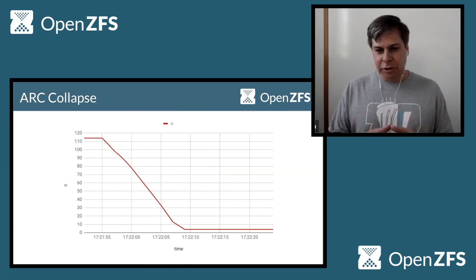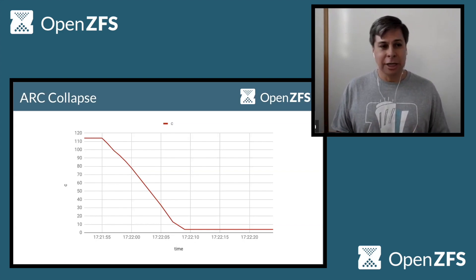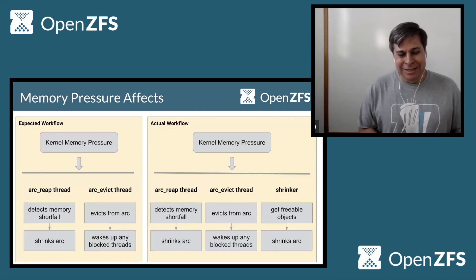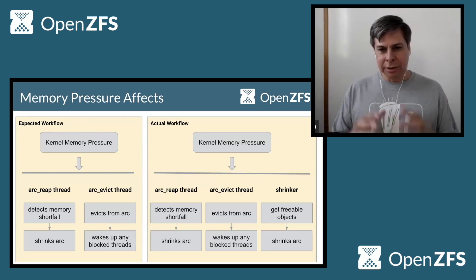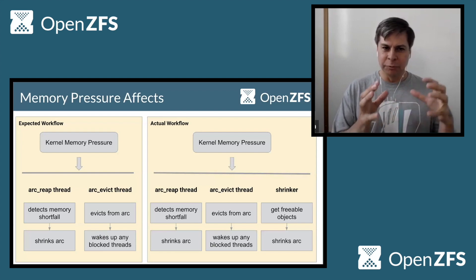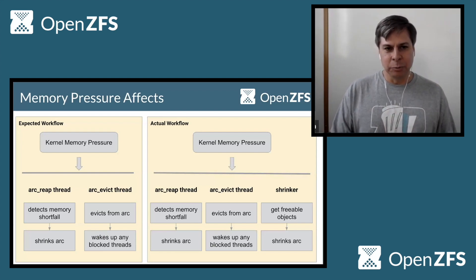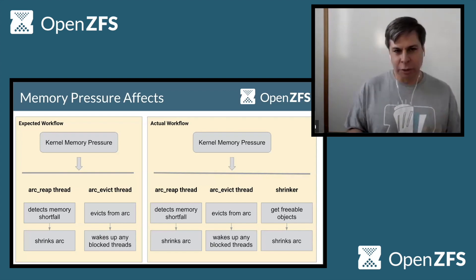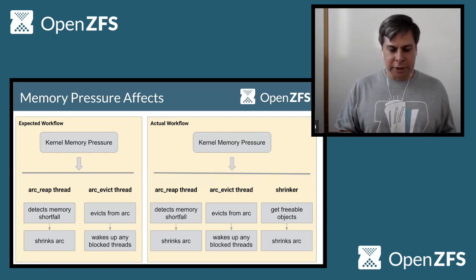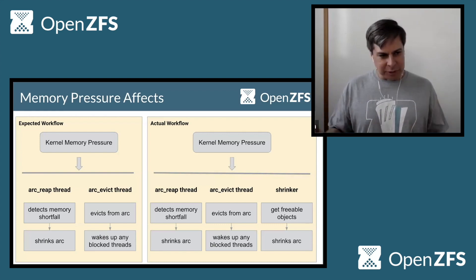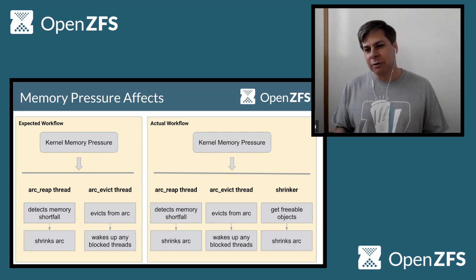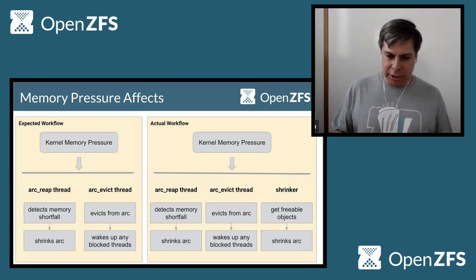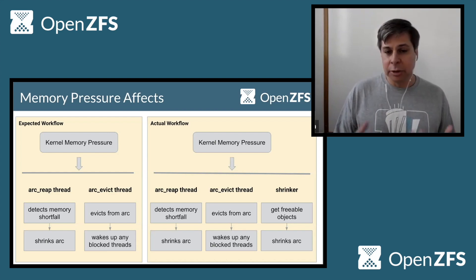What's interesting is we had made the change to increase the size of the ARC months and months ago, and we're now starting to see this on real systems. We had to step back. We were familiar with the expected workflow on the left side of your screen — the ARC has these two threads that run: one detects memory shortfalls and tries to shrink the target size of the ARC, while the other thread goes in and evicts to actually get us down to the right size. If there are any threads waiting for it, it blocks.